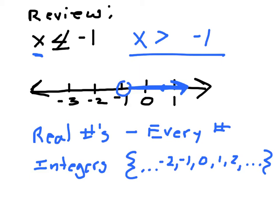Since it's a solid arrow, it includes all those numbers — real numbers. Real numbers represent every number: any number you can think of. Real numbers are decimals, fractions, whole numbers, and integers. Now integers are these numbers: negative 2, negative 1, 0, 1, 2, and so on. Integers represent any number except a fraction or a decimal. So negative 5 is an integer, 10 is an integer, but fractions and decimals are not integers.